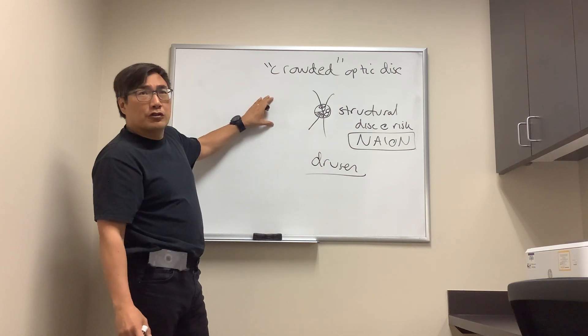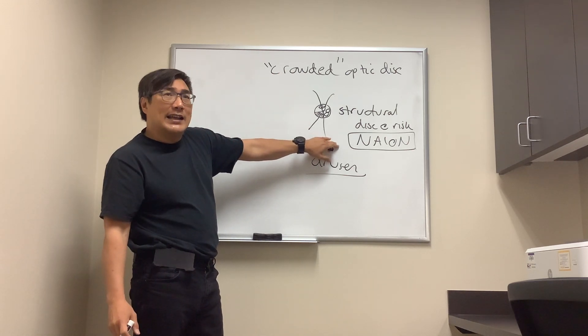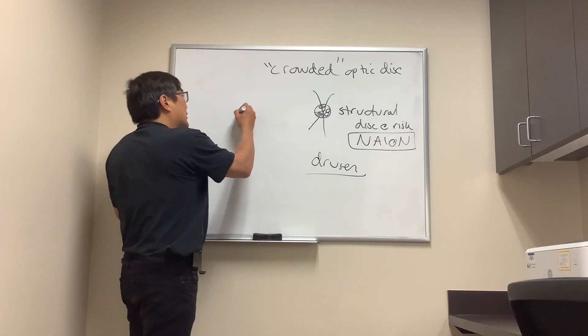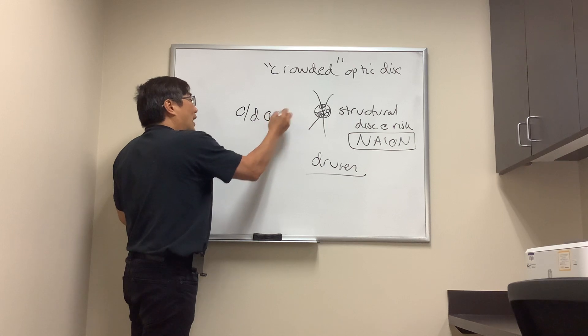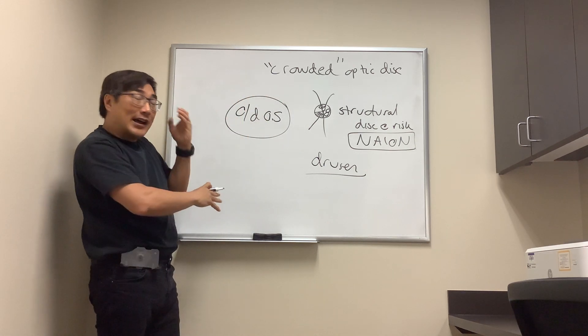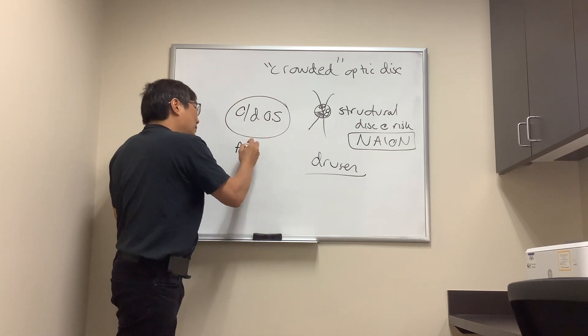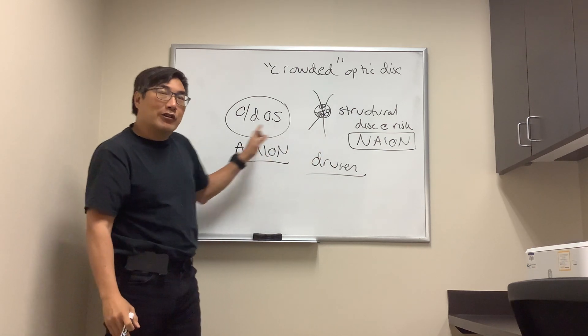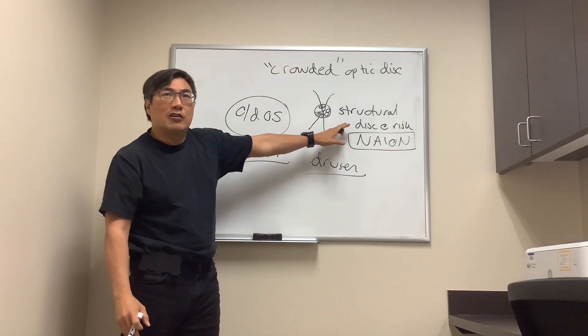The reverse is also true. If you have what you think is NAION, but they don't have the crowded small disc at risk in the fellow eye—let's say the cup-to-disc ratio is 0.5 in the uninvolved other eye—then you really should be thinking that maybe this is arteritic anterior ischemic optic neuropathy rather than non-arteritic. We're going to look in the other eye for the crowded small disc.